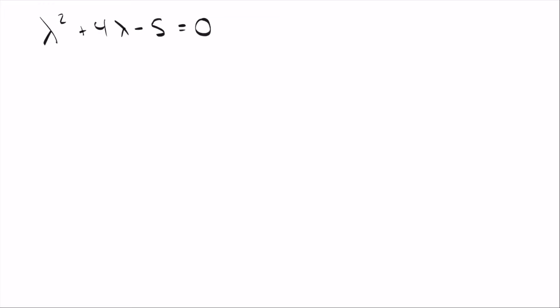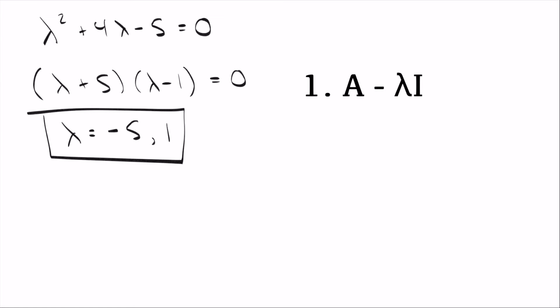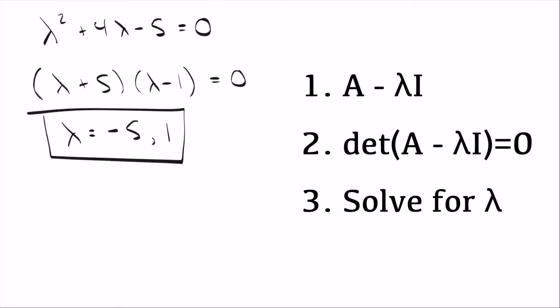We set the characteristic polynomial equal to 0 and solve. This factors as (lambda + 5)(lambda − 1), which multiplies to negative 5 and adds up to 4. Solving gives eigenvalues negative 5 and 1. To recap: take A, subtract lambda I (which puts minus lambda on each diagonal entry), take the determinant, set it equal to 0, and solve for lambda.